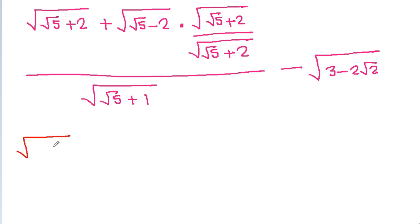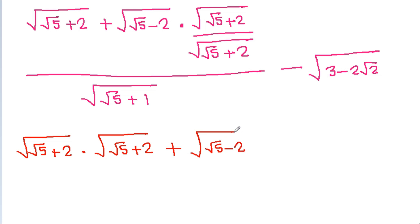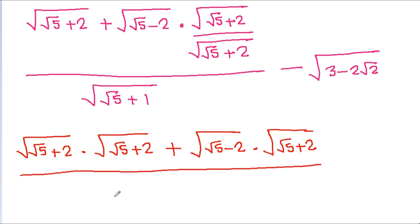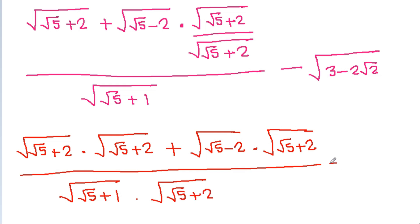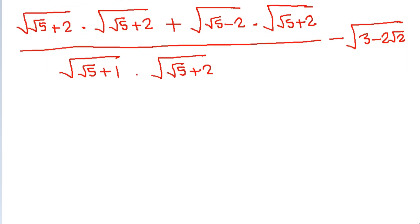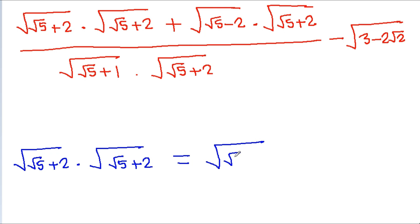It is a square root of (root 5 plus 2) into a square root of (root 5 plus 2), plus a square root of (root 5 minus 2) into a square root of (root 5 plus 2), over a square root of (root 5 plus 1) into a square root of (root 5 plus 2). The square root of (root 5 plus 2) squared gives root 5 plus 2, as the square roots cancel.